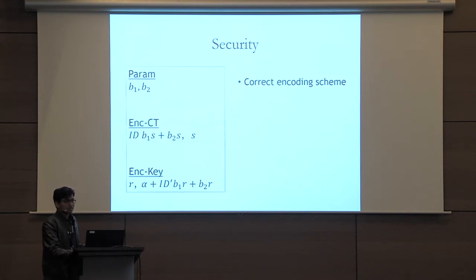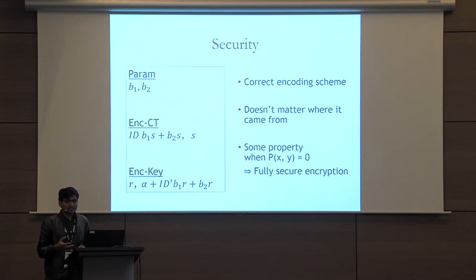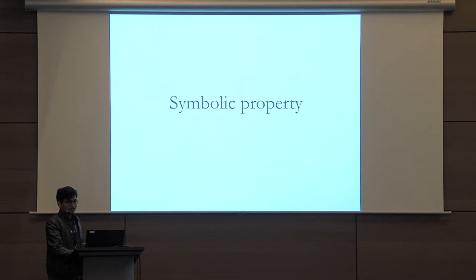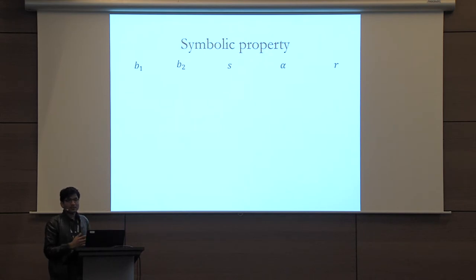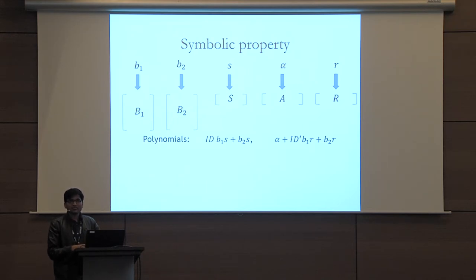Now comes the more interesting question: I have a correct encoding scheme — this could have come from anywhere. Can I prove some property about this encoding when the predicate is false that will help me in building a fully secure encryption scheme? Symbolic property is one such property. Here we need to find a mapping from the variables in the encoding to some matrices and vectors, such that if I substitute the variables in the polynomials with these matrices and vectors, they should all go to zero.